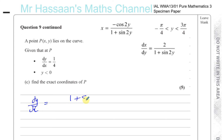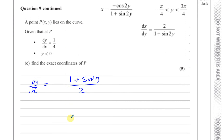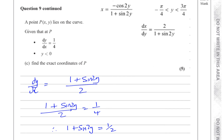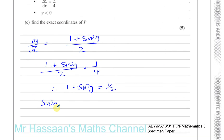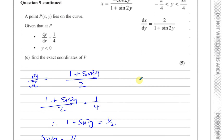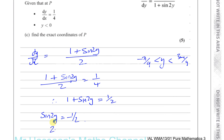And we know that dy/dx equals a quarter. So 1 plus sine of 2y over 2 equals a quarter. Therefore 1 plus sine of 2y equals a half — multiply both sides by 2. So the sine of 2y equals a half minus 1, which is minus a half. We know the values of y are between minus pi over 4 and 3 pi over 4. Since we're dealing with 2y, that range becomes minus pi over 2 to 3 pi over 2. So we find the inverse sine of minus a half.